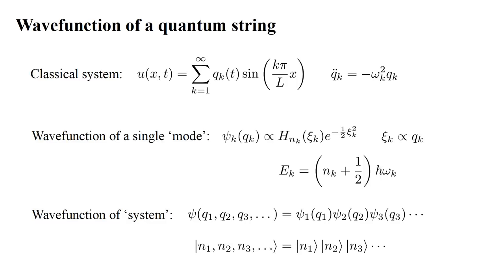Or, using the Dirac ket notation, the quantum state of the system is described by the occupation numbers n1, n2, n3, et cetera, where n_k is the number of energy quanta in the mode with frequency omega k.